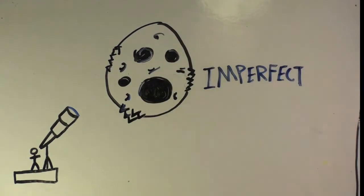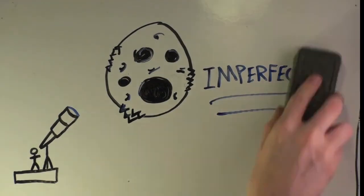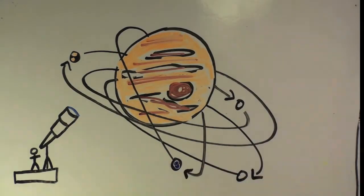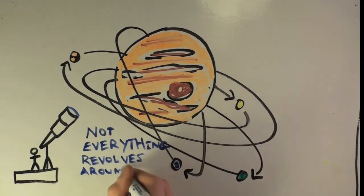This disproved the idea that Earth was significant in its imperfections. He also discovered four moons orbiting Jupiter. This proved that not everything orbited the Earth.